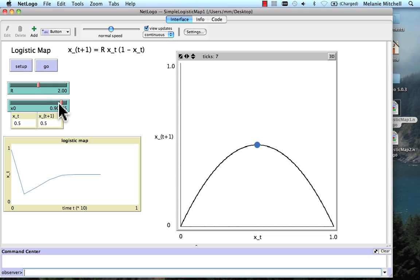Same thing if we change x0 all the way down to some really small value here, 0.01143. So we set up, it's very close to zero down here at the bottom. And go. If I click go repeatedly, the system ends up at the value of 0.5 and stays there. So this 0.5 here is a fixed point attractor for the system. No matter where the system starts, it always ends up at the value of the attractor.